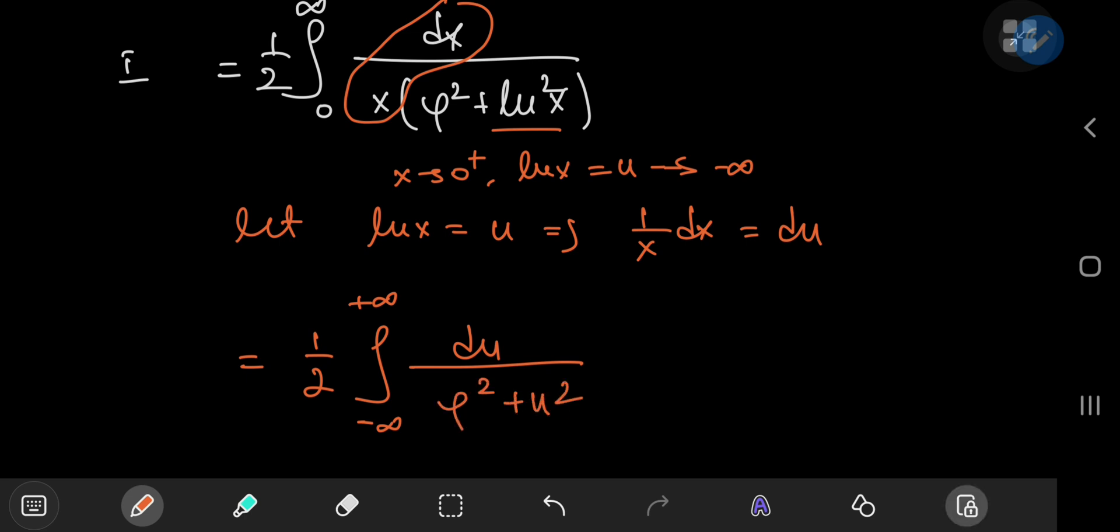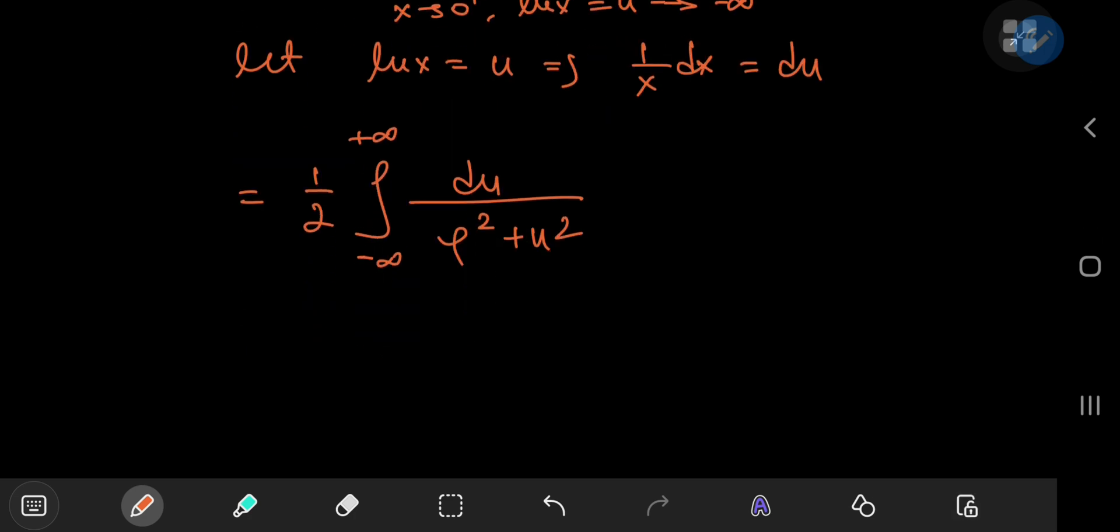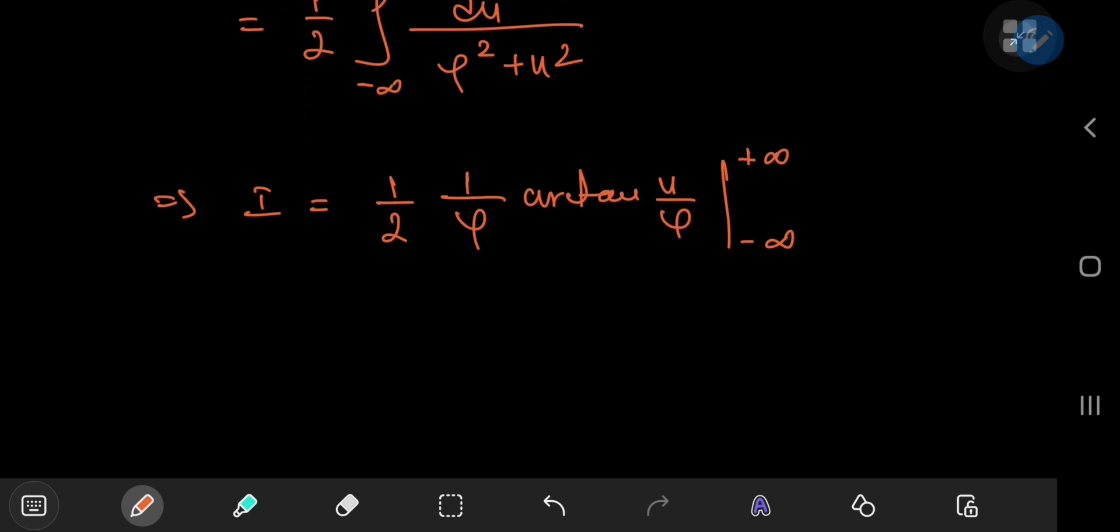And we have the differential element du. We're dividing by phi squared plus u squared. And we recognize this as the familiar arctan integral. So this implies that i equals 1 half of, we're going to need a 1 by phi outside times the inverse tangent of u by phi, with the limits being negative and positive infinity.